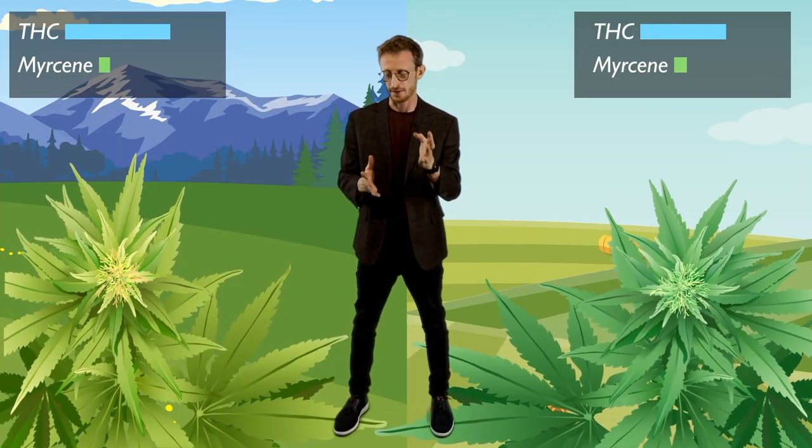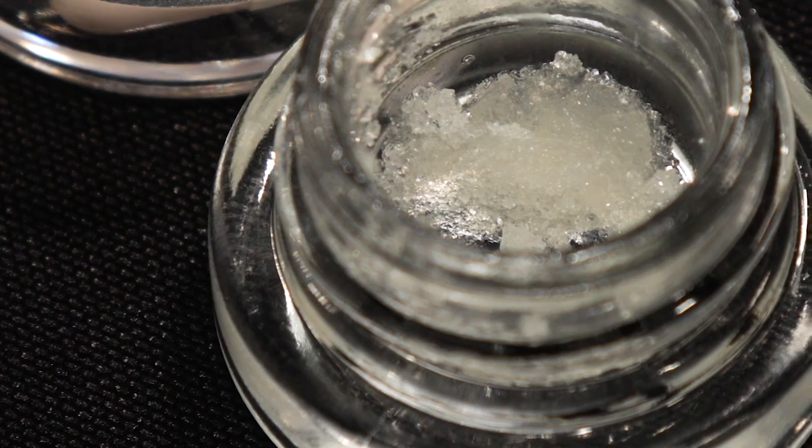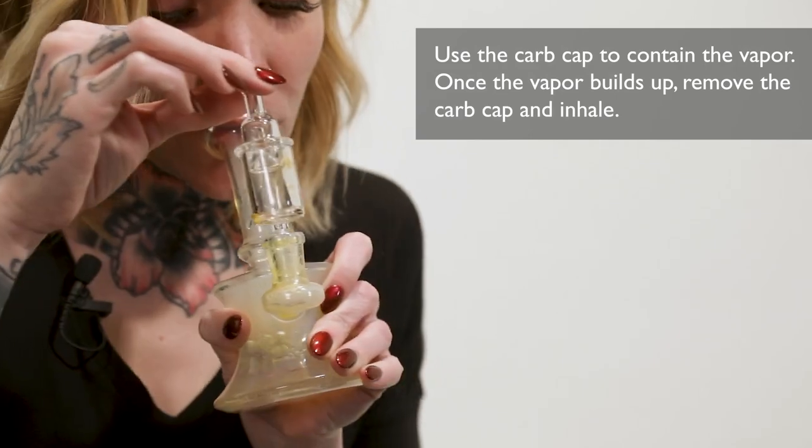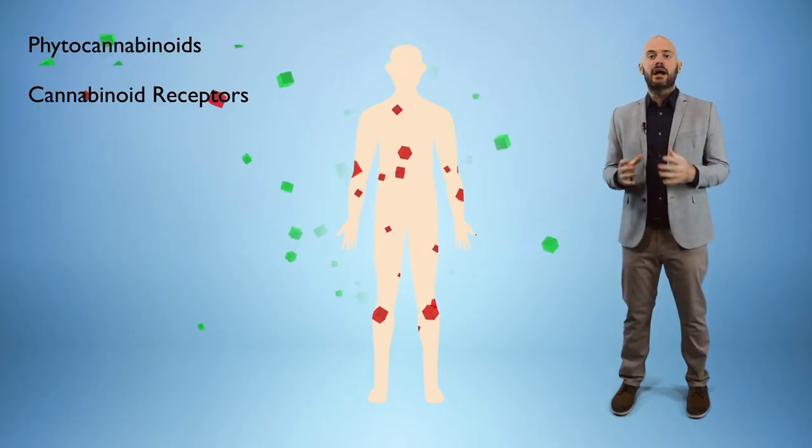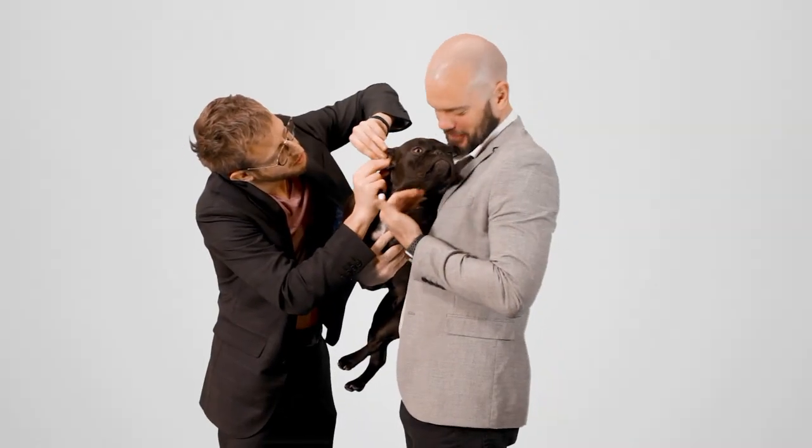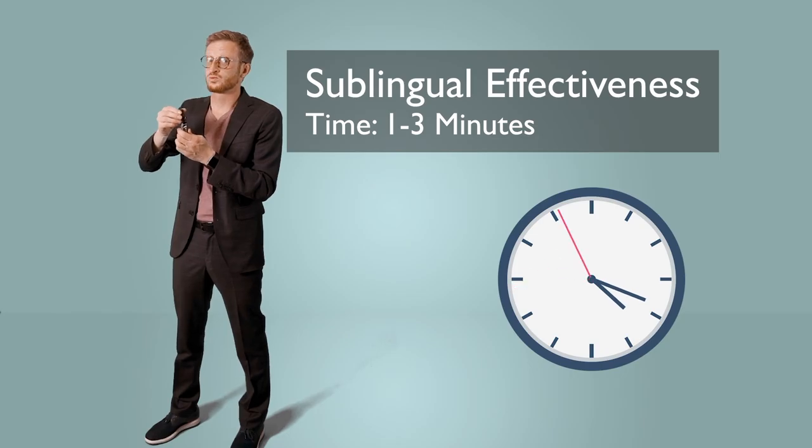Next we have Cannabis Consultant Training, a course designed primarily for dispensary staff — bud tenders, technicians, whoever is at the front lines selling cannabis legally to the public. This applies to both hemp and recreational or medical dispensaries. The course goes beyond a 101 level — we get into the science and nitty-gritty details of understanding cannabis products, how they make you feel, how to talk about them to customers, the endocannabinoid system, terpenes, cannabinoids, and more. It's technical but still approachable, and great for training staff or even everyday consumers who want to know more than what's on YouTube.